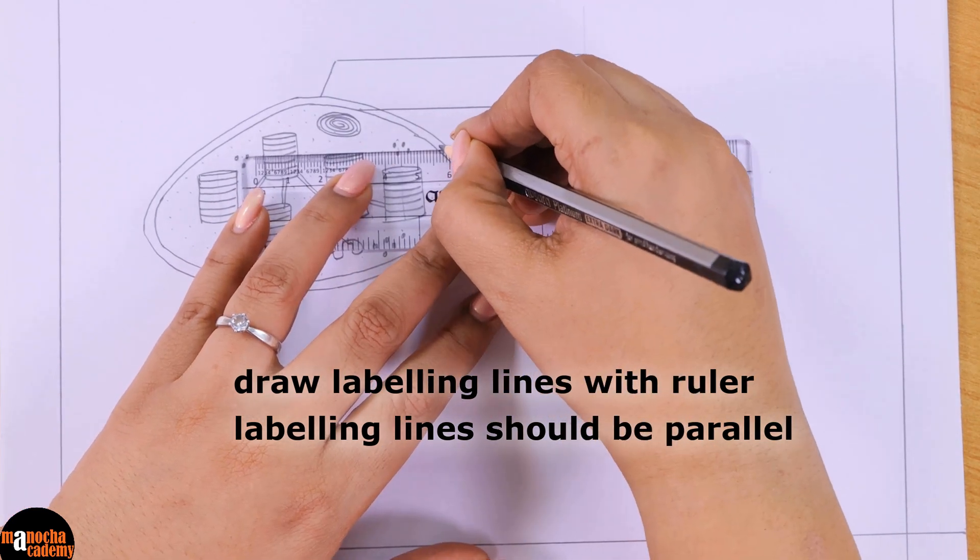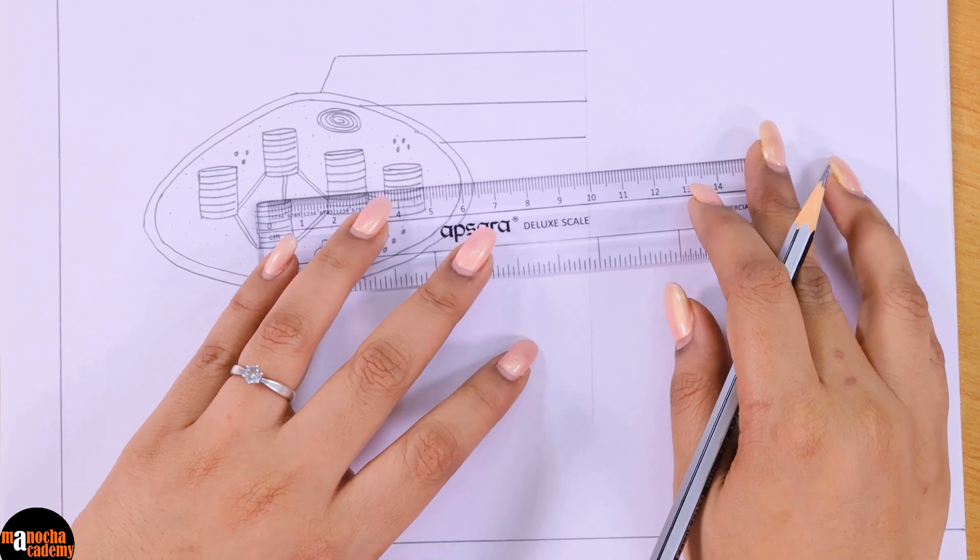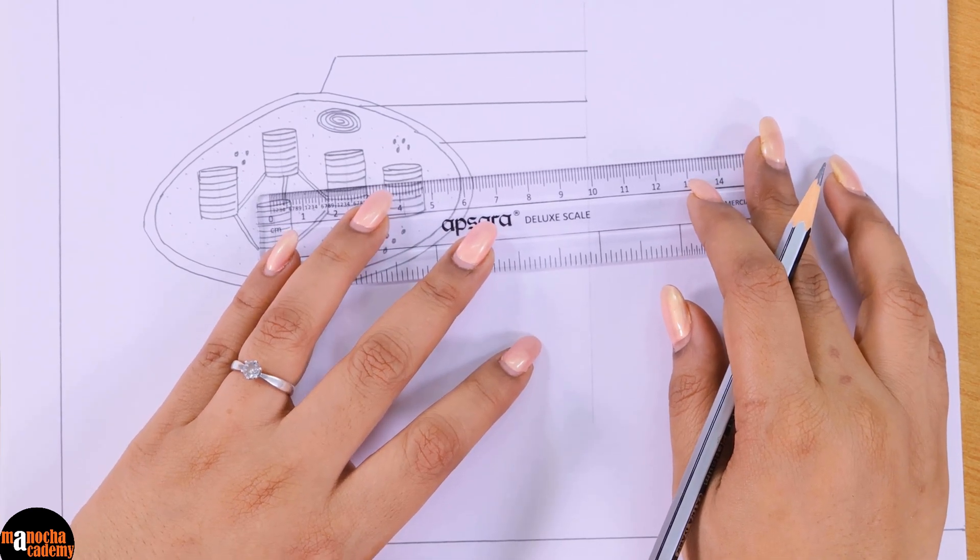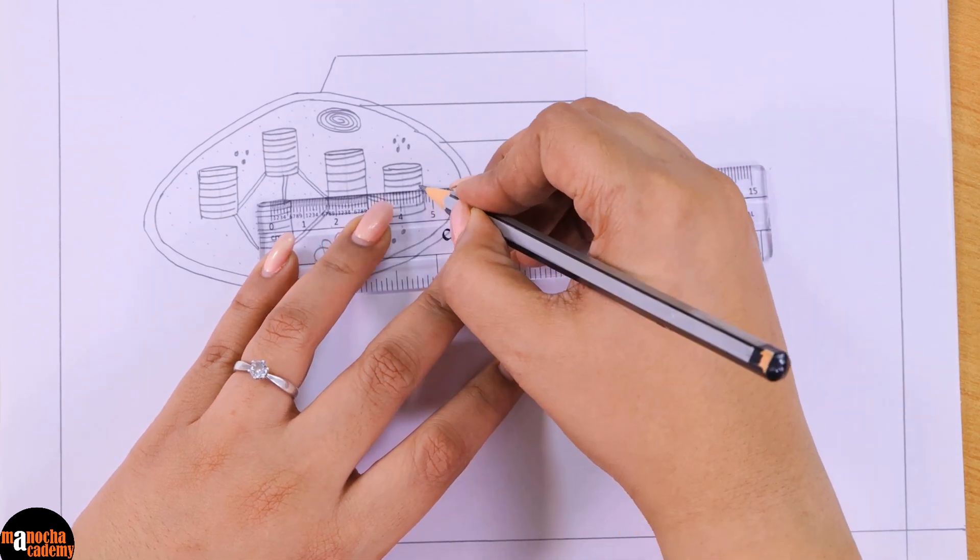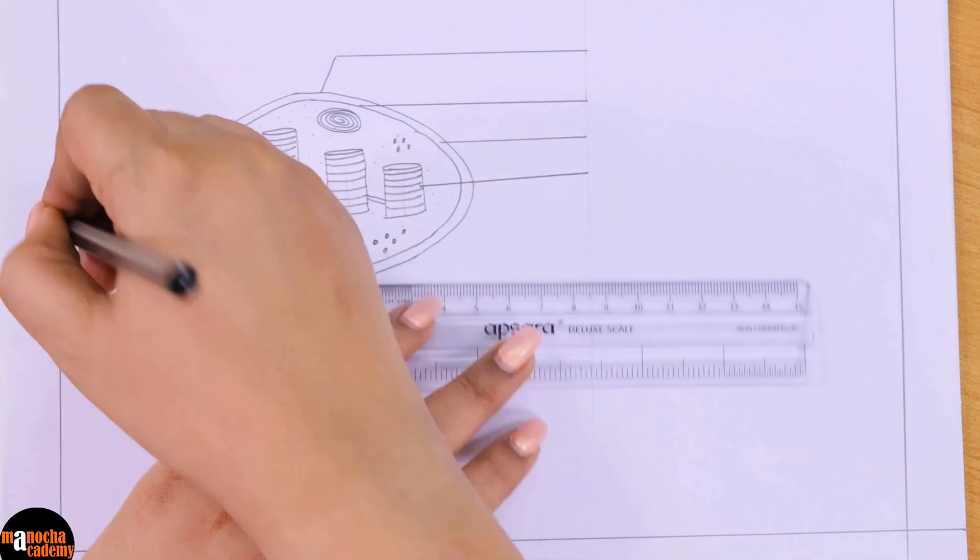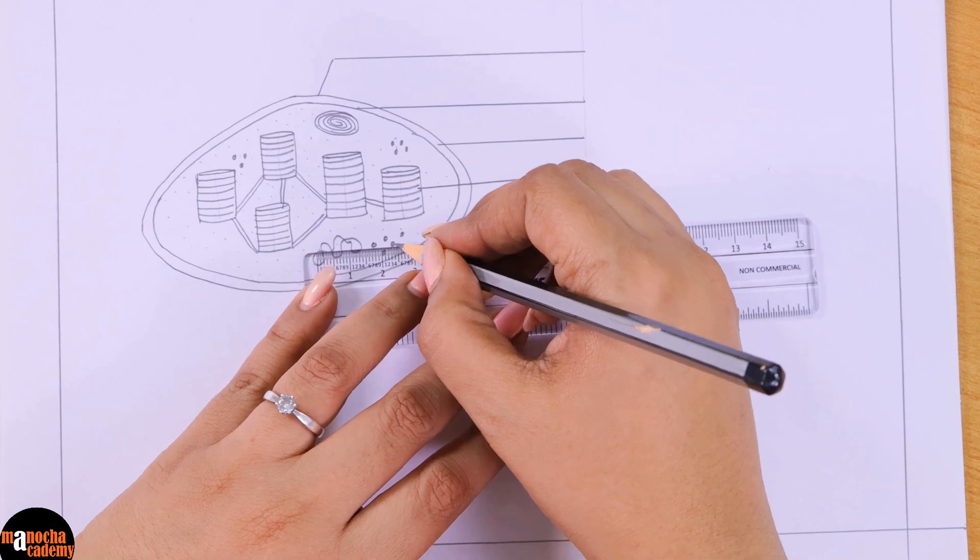We will try to label as much as we can towards the right hand side. And just in case if there is still something that you want to label and it cuts through the entire diagram if you label on the right hand side, then we will label it on the left hand side.